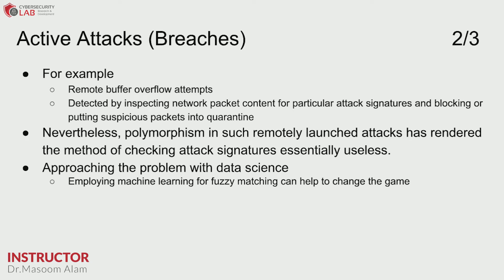Active attacks are performed on private systems — for example, remote buffer overflow attempts, or detecting network-level packet content for particular attack signatures and blocking suspicious packets. Approaching this problem with data science means employing machine learning for fuzzy matching, or mining patterns and detecting anomalies in the network in order to prevent breaches.